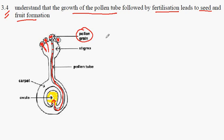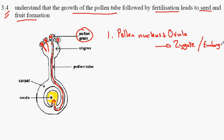So we have a number of things that will occur. The pollen nucleus will fertilize the ovule and that will lead to the formation of a zygote. And this in turn will grow into the embryonic plant.